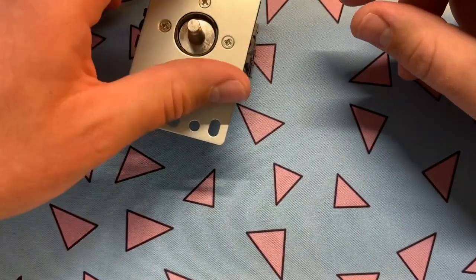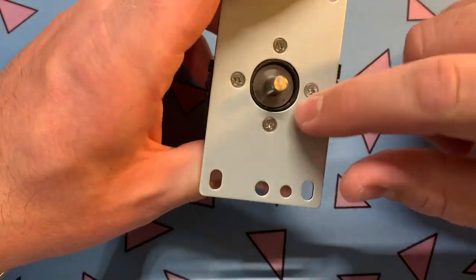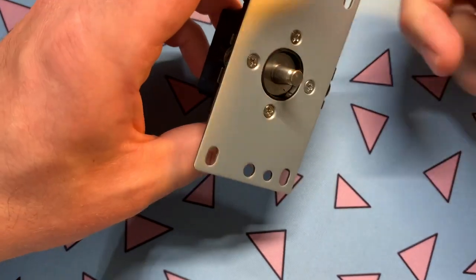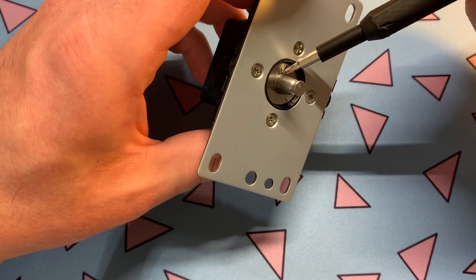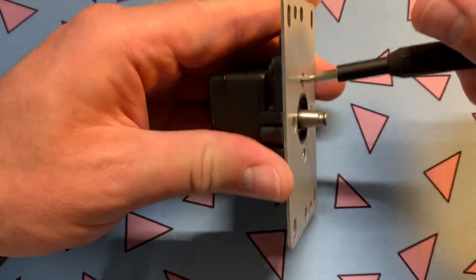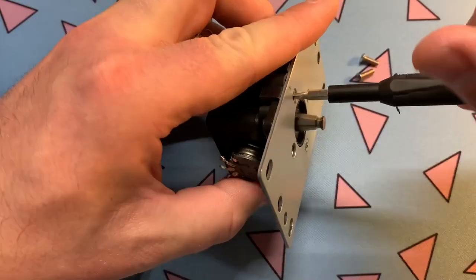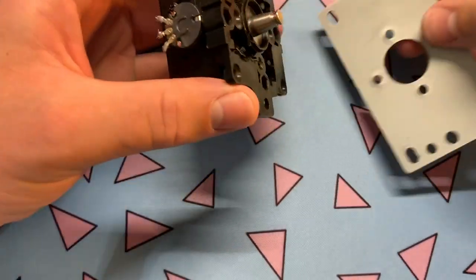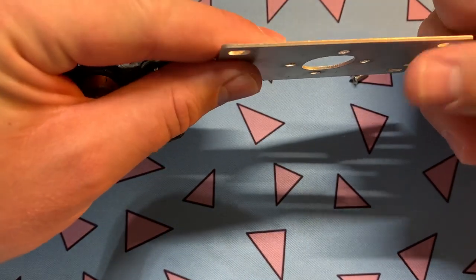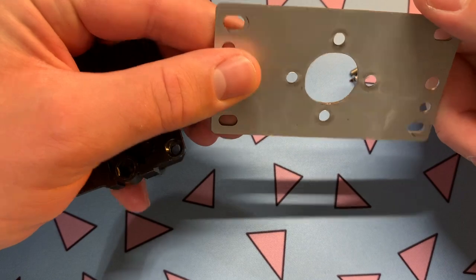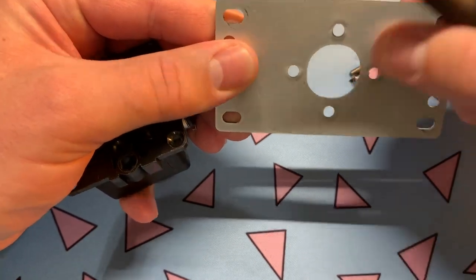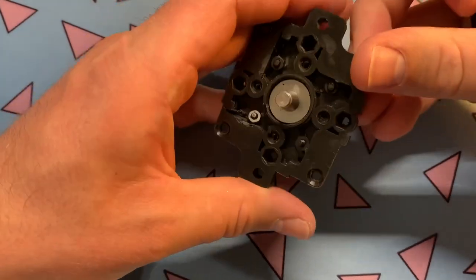Going into the actual stick, it's set up just like the Sanwa JLF where you have your pivot and your shaft. You know, these four screws, so if we just take these out with a phillips head screwdriver, this comes off. So then you've got your cheap knockoff plate and it's pretty easy to tell because it's got this sharp edge here that the Sanwa ones don't have, and then this is not circular as well.